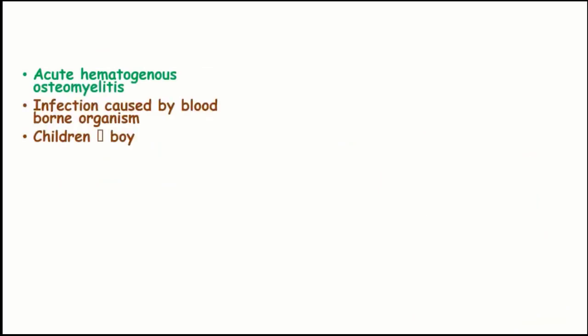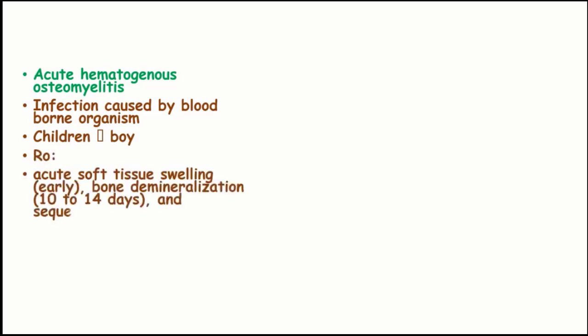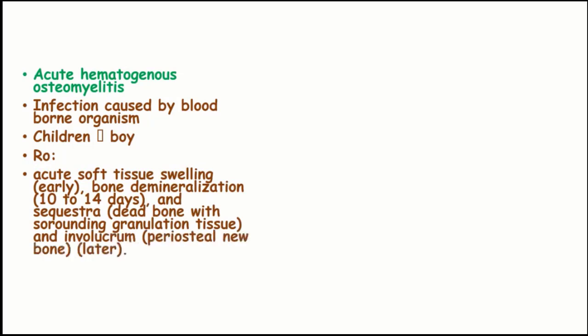Acute hematogenous osteomyelitis is caused by blood-borne organisms and is most common in children. The features include soft tissue swelling at early stages, bone demineralization and sequestration — that is, the dead bone with surrounding granulation tissue — and involucrum or periosteal new bone formation later.